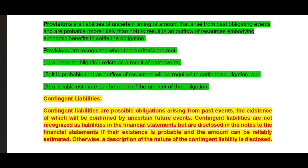Then contingent liabilities — what are contingent liabilities? Contingent liabilities are possible obligations arising from past events, the existence of which will be confirmed by uncertain future events. Therefore, contingent liabilities are not recognized as liabilities in the financial statements, but are disclosed in the notes to the financial statements if their existence is probable and the amount can be reliably estimated. Otherwise, only the description of the nature of the contingent liabilities is disclosed.